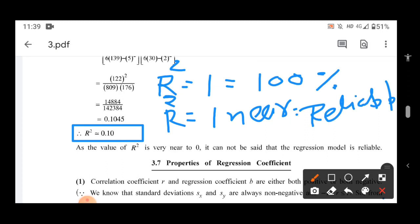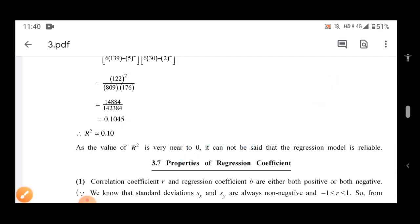If our answer is 0.50, 0.60, or 0.90, we will write the regression model is reliable. If R square value is close to 0, we will write regression model is not reliable or less reliable. And if R square equals 0, we will write regression line is not valid. You have to remember this. Clear? Rest of the discussion we will do next time. Okay, bye.